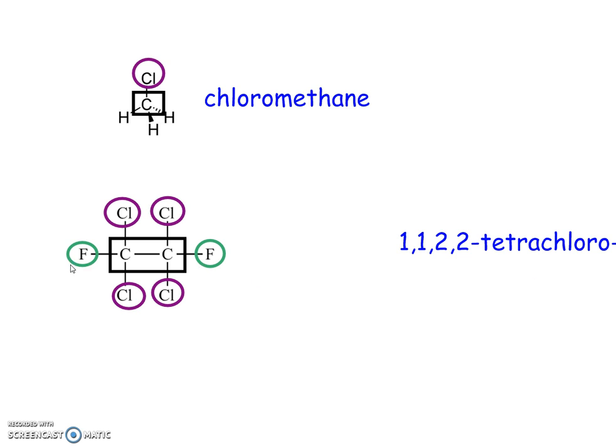Now the fluorines coming off of carbon 1 and carbon number 2. So 1, 2, there's 2 of them, so di. It's fluorine, so fluoro.